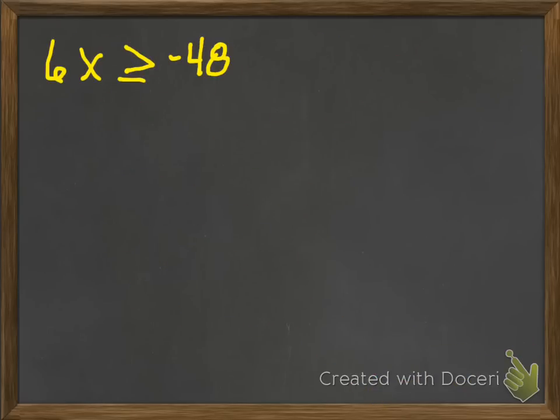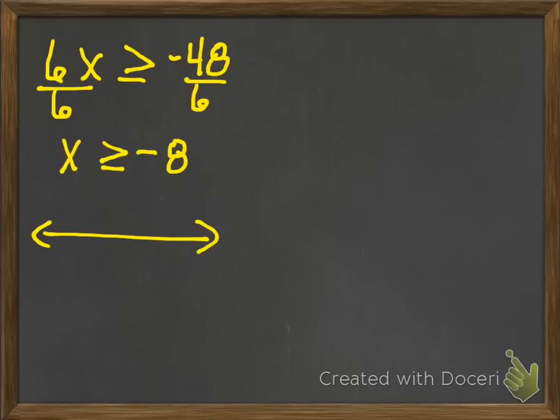Okay, let's look at this example. 6 times x, greater than or equal to negative 48. So I'm going to divide by 6. Here, I'm dividing both sides by positive 6. So because of that, I am not going to change the direction of the inequality. That gives me the same answer, or x is greater than or equal to negative 8, which I can put as a closed dot, shade to the right.